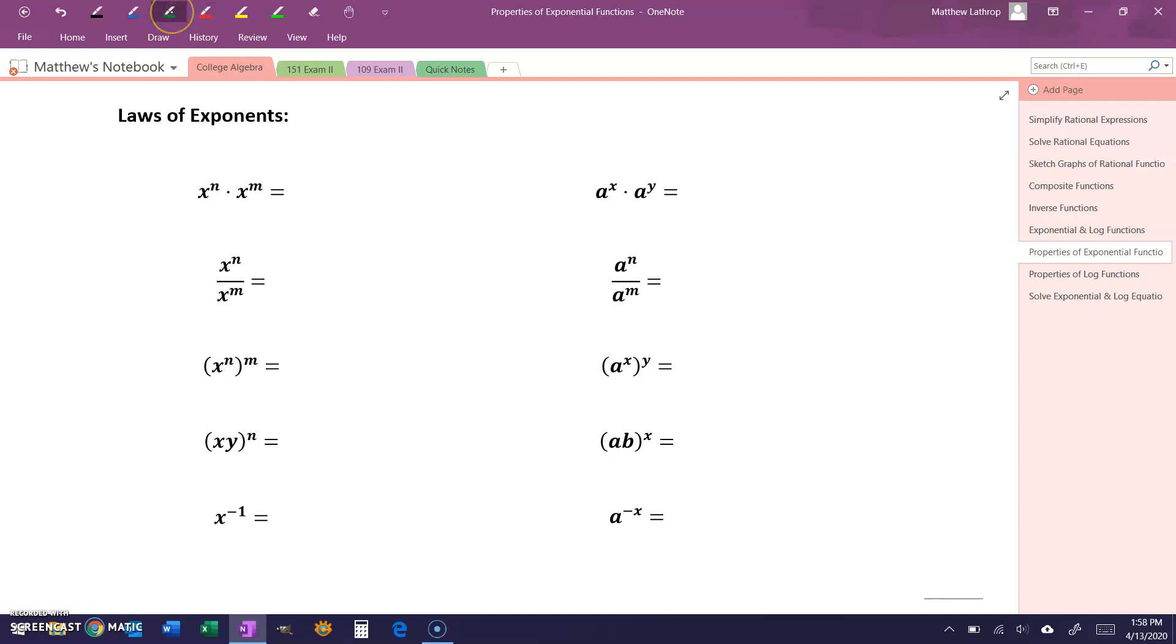If we have, for instance, something like x to the n times x to the m power, in this case, with that x variable being the same, that means we can combine this into a single expression by adding those two exponents together. So this would be the same thing as x squared times x cubed is equal to x to the fifth power.